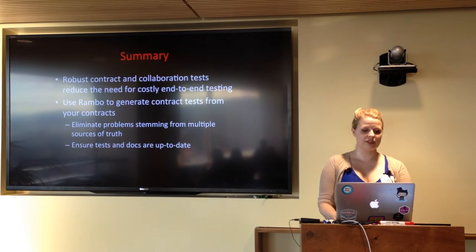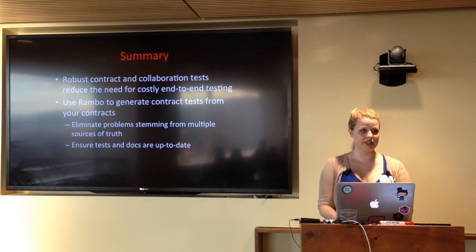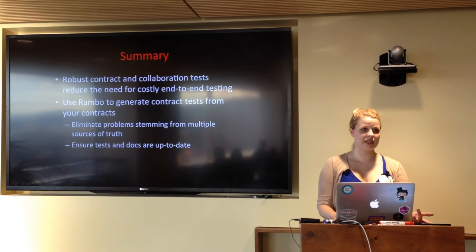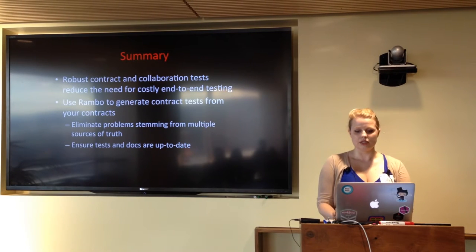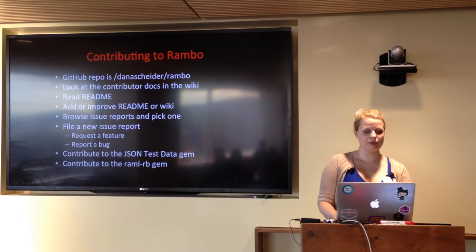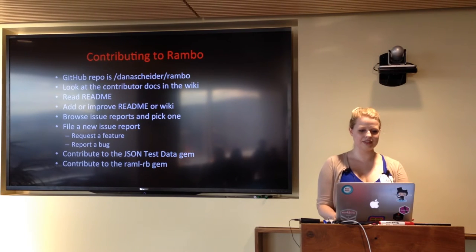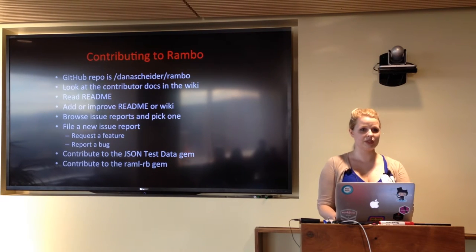To summarize: robust contract and collaboration tests reduce the need for end-to-end testing by providing clarity about exactly what the API is guaranteed to do and verifying that it does that. Using Rambo to generate contract tests from contracts eliminates the problem stemming from multiple sources of truth and automatically tests that an API works as documented. If anyone would like to contribute to Rambo, I am the maintainer and I'm super friendly. I encourage you to take a look at it on GitHub — there are issues flagged as help wanted, and I try to make contributing easy.